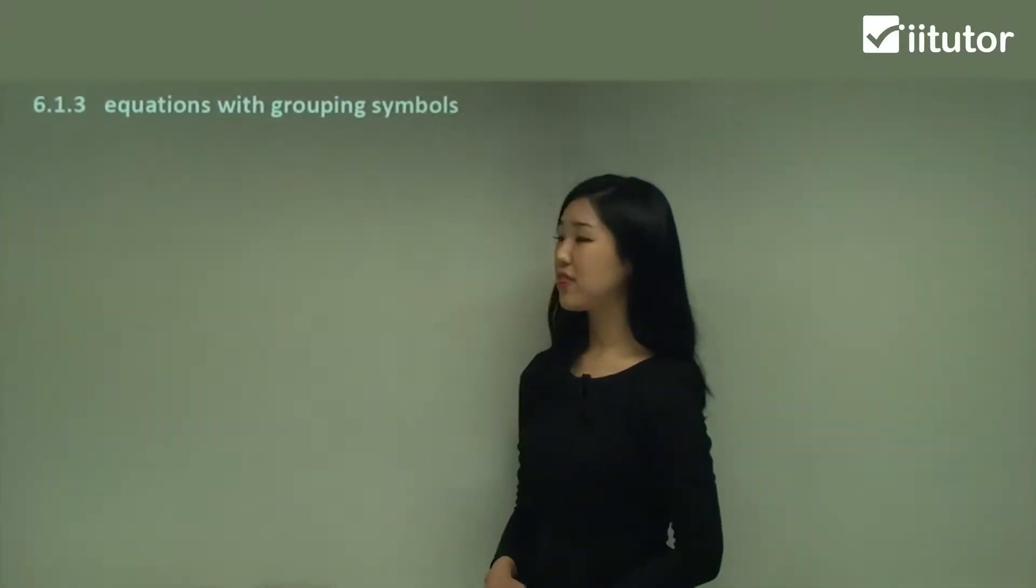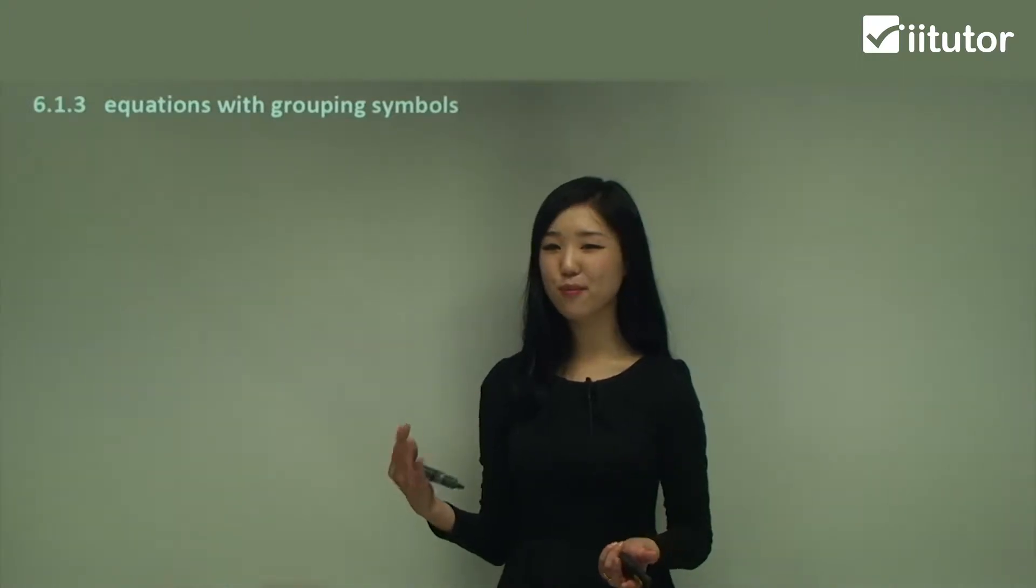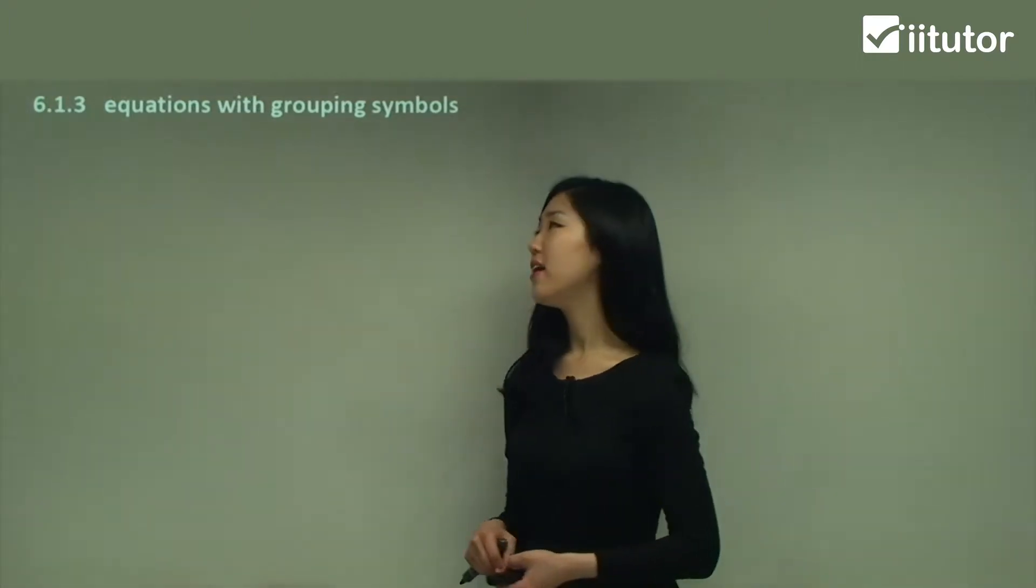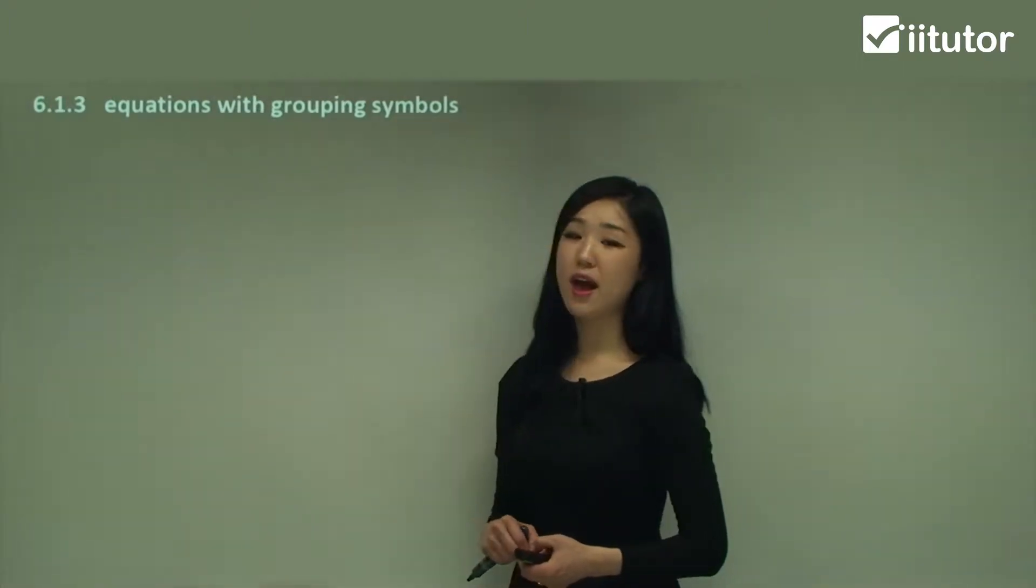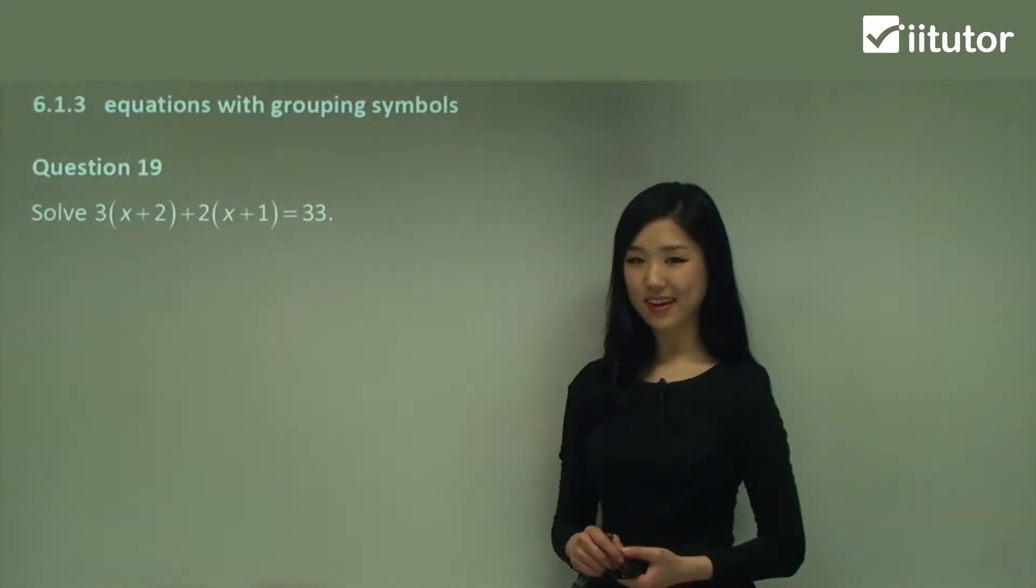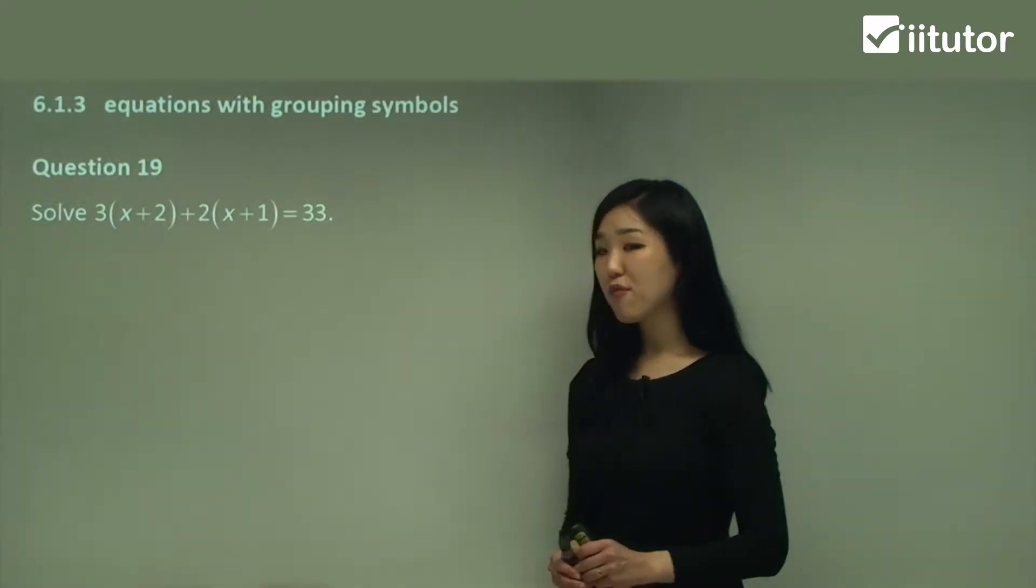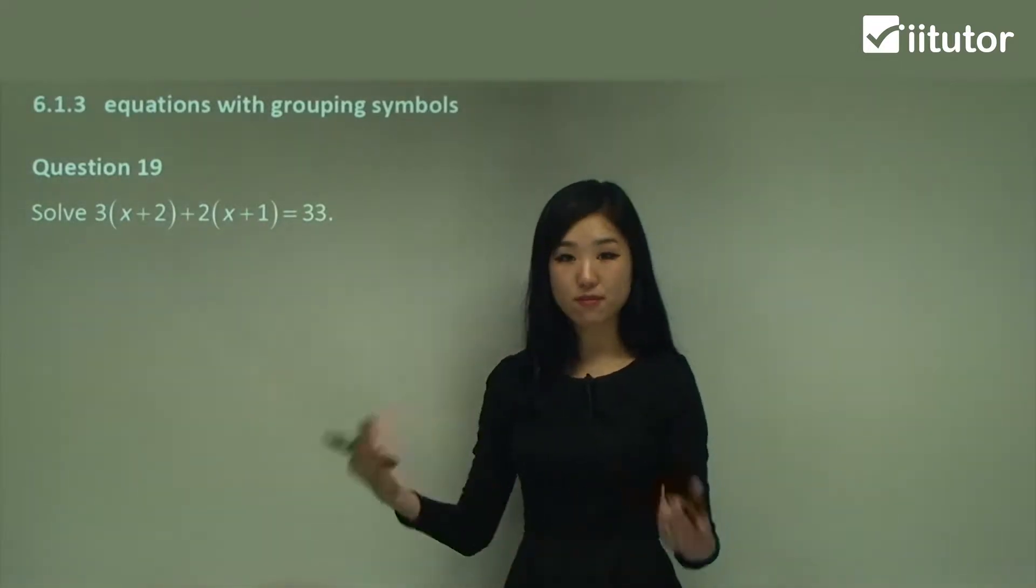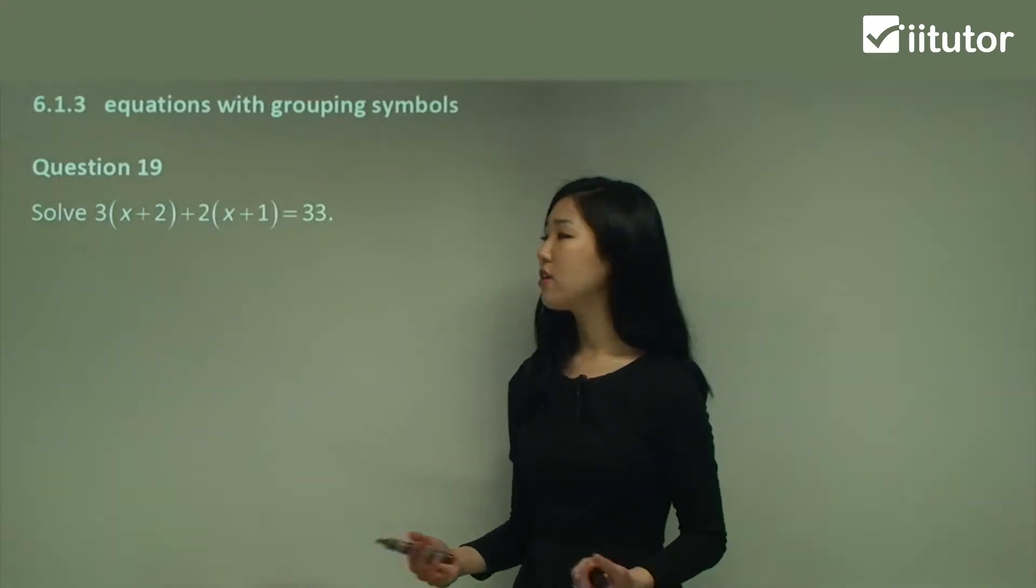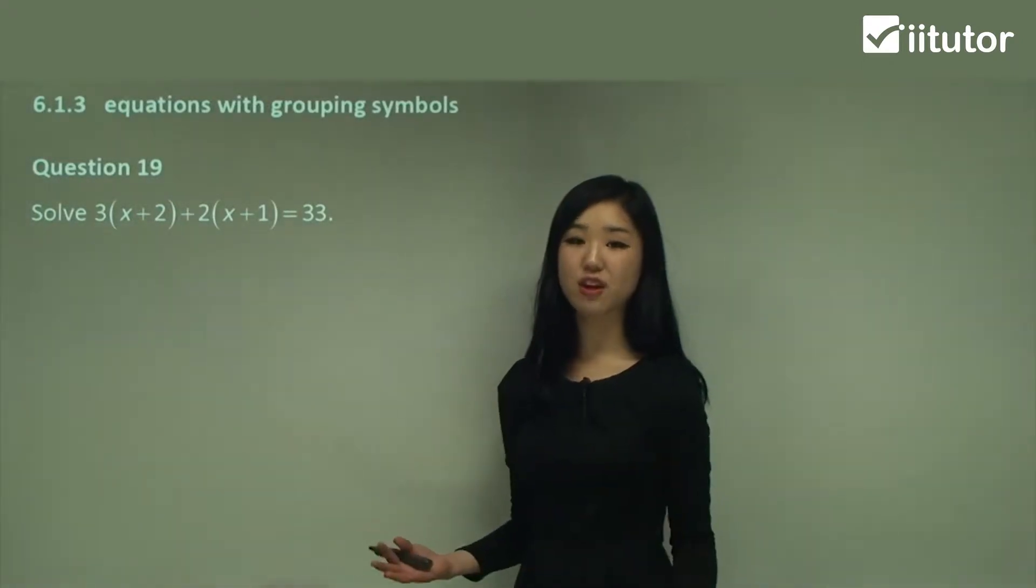Now we'll look at equations with grouping symbols. So grouping symbols are brackets. You've probably seen a lot of brackets before. Now we'll look at some equations where we have brackets involved. So let's get started with question 19. When you have brackets guys, it's a good idea to get rid of them because brackets are annoying.